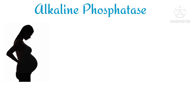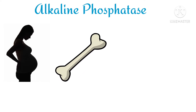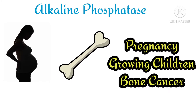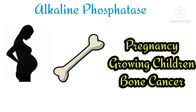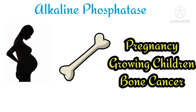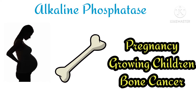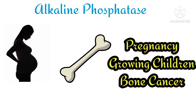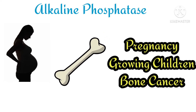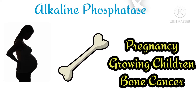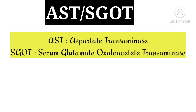Alkaline phosphatase is also normally released by the placenta during pregnancy and by bones. So during pregnancy and whenever there is normal growth of a child, or in conditions such as bone cancer, alkaline phosphatase levels are also increased. Therefore, to rule out liver problems, all other tests such as bilirubin, ALP, and AST are needed together.